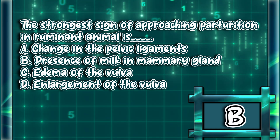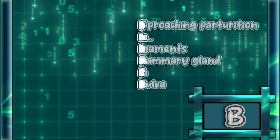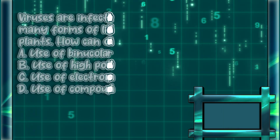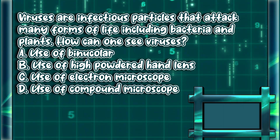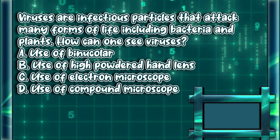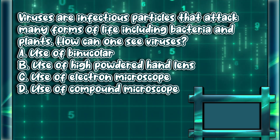The strongest sign of approaching parturition in a ruminant animal is: A) change in the pelvic ligaments, B) presence of milk in mammary gland, C) edema of the vulva, D) enlargement of the vulva. The answer is letter B.